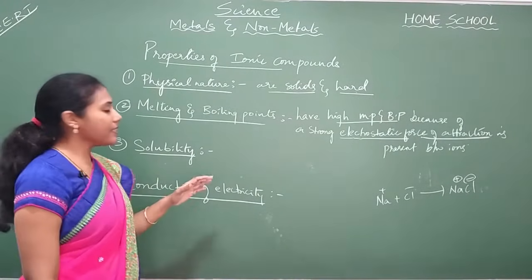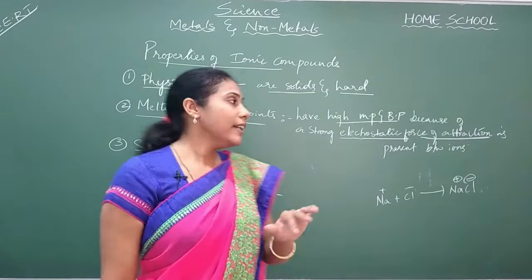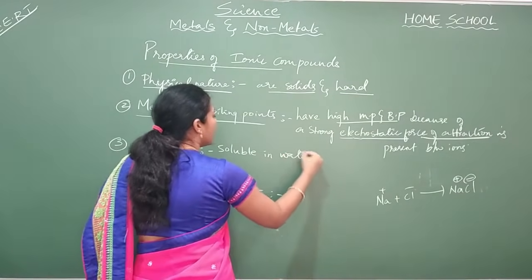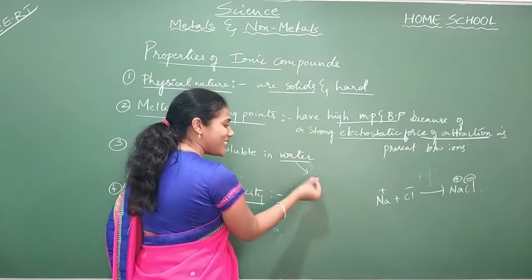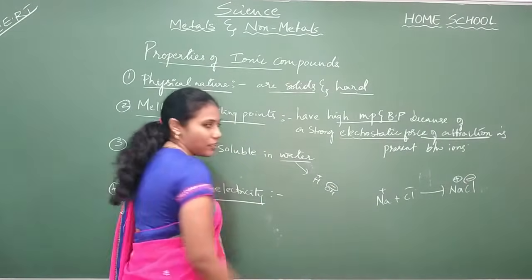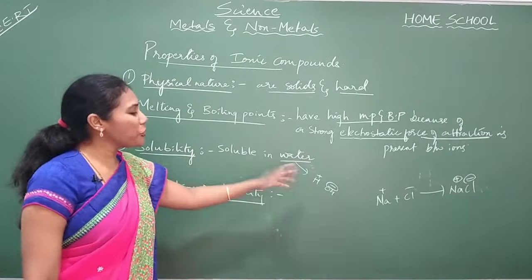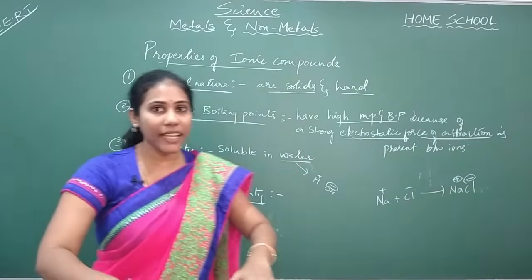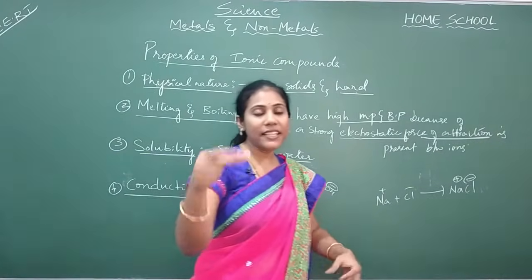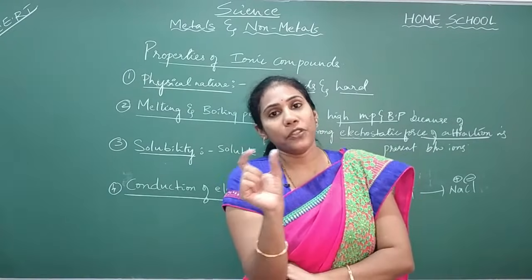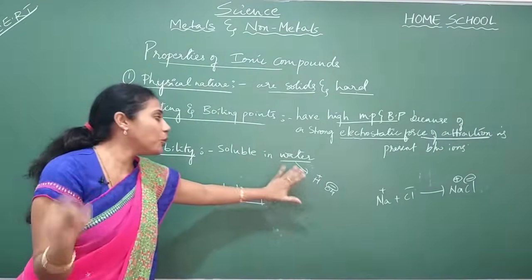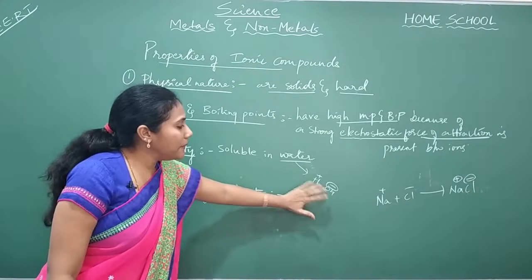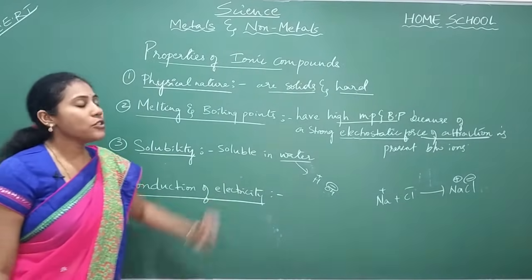Now, solubility — let us discuss whether ionic compounds are soluble in water or not. All ionic compounds are soluble in water. Water has H⁺ ions and OH⁻ ions, and ionic compounds also have positive and negative charges. Charged compounds are always soluble in charged solvents — the best example is water. Whenever a compound has a charge, we call it polar. Always, a polar compound is soluble in a polar solvent, and water is a polar solvent. So we say ionic compounds are soluble in water.